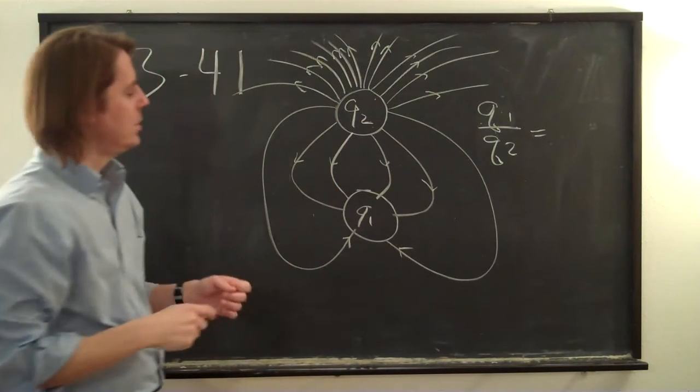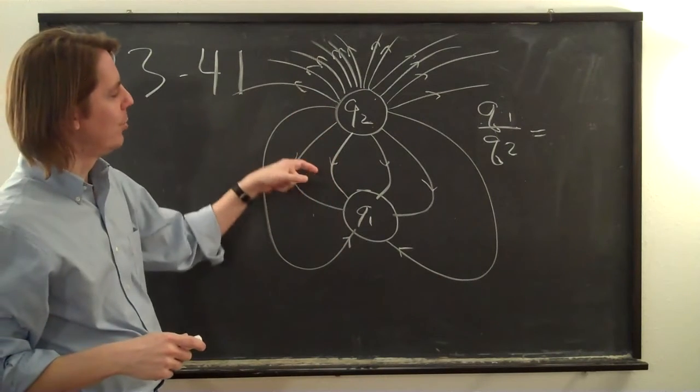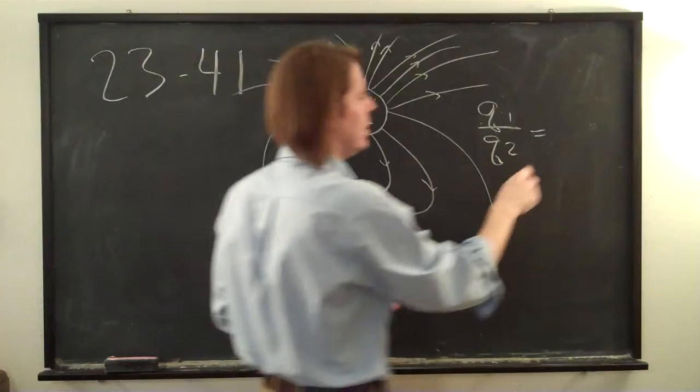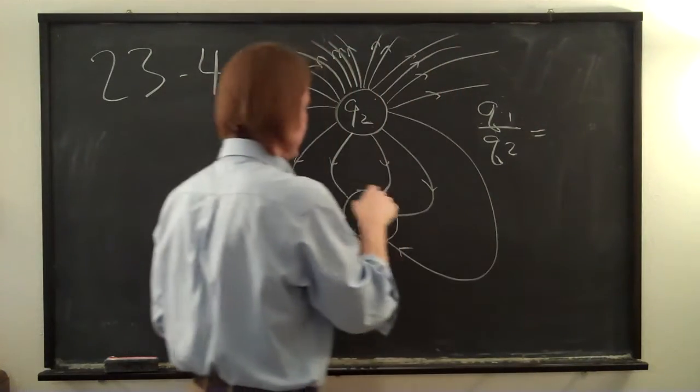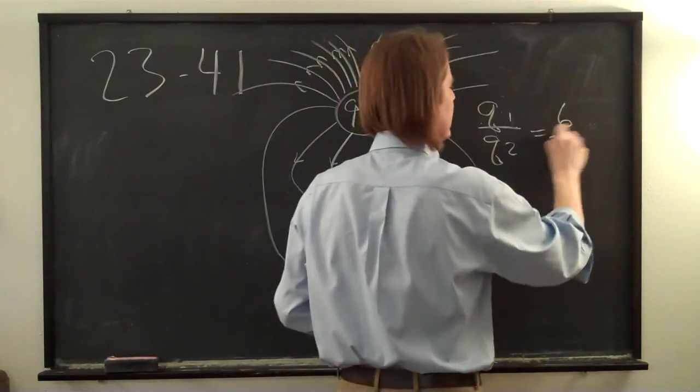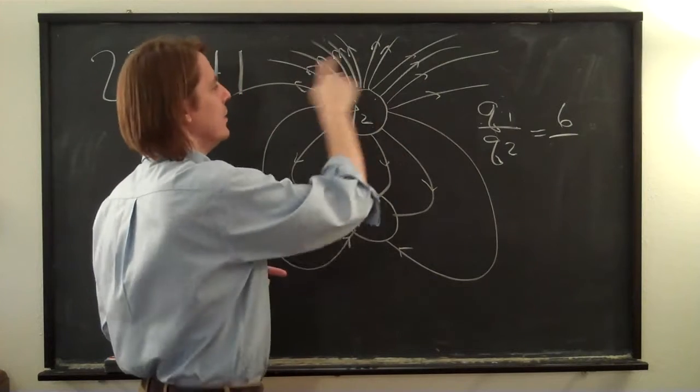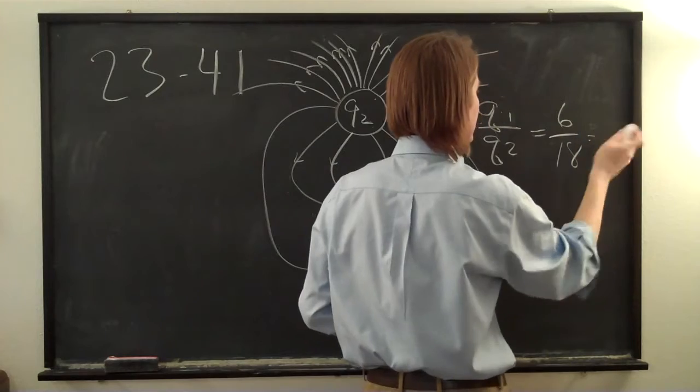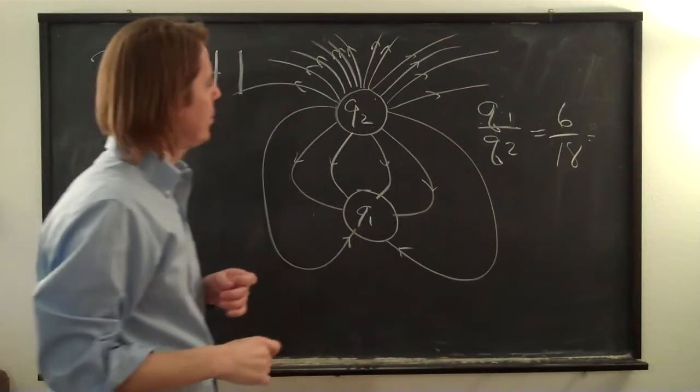So for this one, you know that the ratio of the charges will be proportional to the number of lines that terminate on the charge. So here Q1 ends with six lines. Six. And this one ends in 18 lines. There were six that came to here, six here and six there. So that's 18. So that's 1/3.